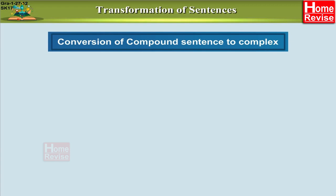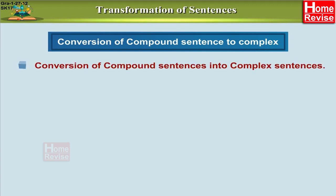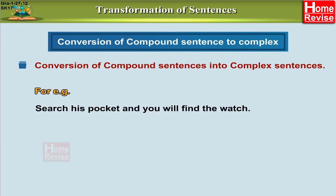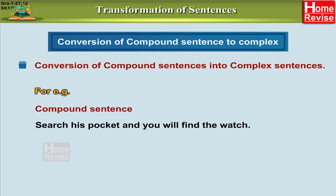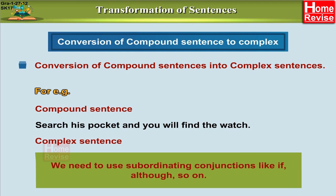Now let's understand how to convert a compound sentence into a complex sentence. Let's take one example: 'Search his pocket and you will find the watch.' It's a compound sentence — both clauses are combined with the conjunction AND. In order to change it into a complex sentence, we need to use subordinating conjunctions like IF, ALTHOUGH, and so on.